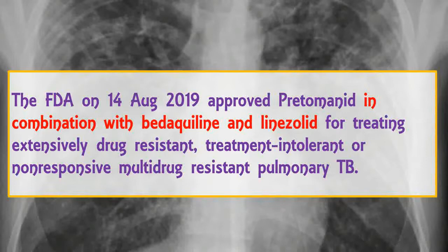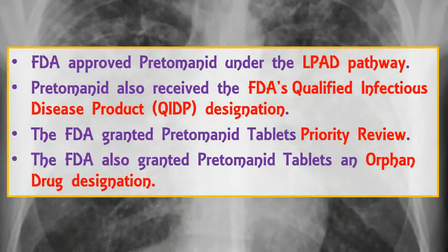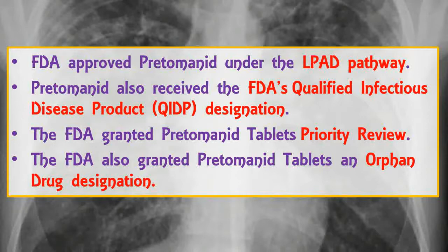The safety and effectiveness of pretomanid, taken orally in combination with bedaquiline and linezolid, was primarily demonstrated in a study of 109 patients with extensively drug-resistant, treatment-intolerant, or non-responsive multi-drug resistant pulmonary TB. Pretomanid is the second drug to be approved under the Limited Population Pathway for Antibacterial and Antifungal Drugs (LPAD pathway), established to advance development and approval of drugs to treat serious or life-threatening infections in a limited population of patients with unmet need.